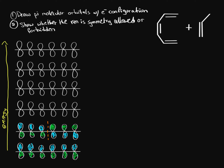The next higher one in energy has two nodes. My method is splitting these to the right and left and removing the one in the middle, so we get nodes placed like this. We can then redraw the orbitals: the blue phase looks like this, and the green phase looks like this. If you don't have colors, you can just shade in one phase to differentiate.